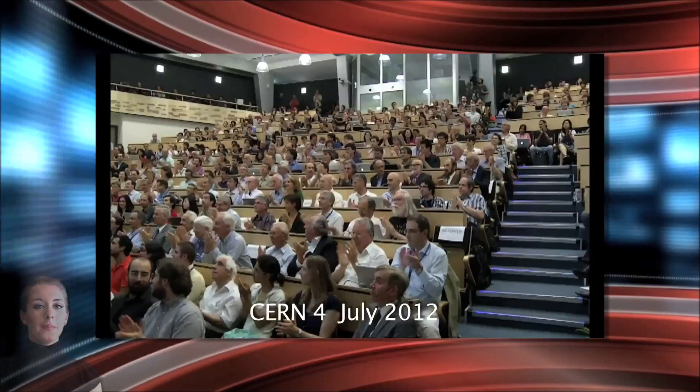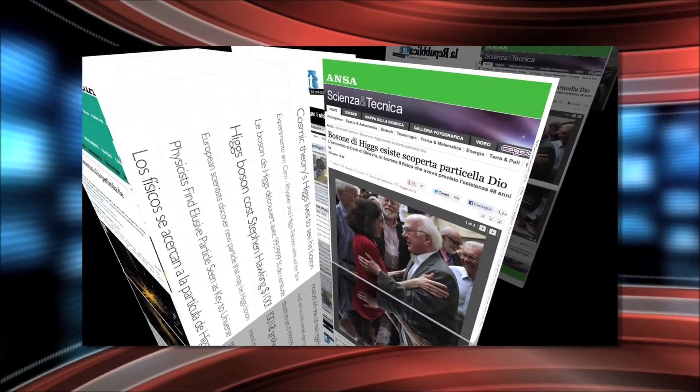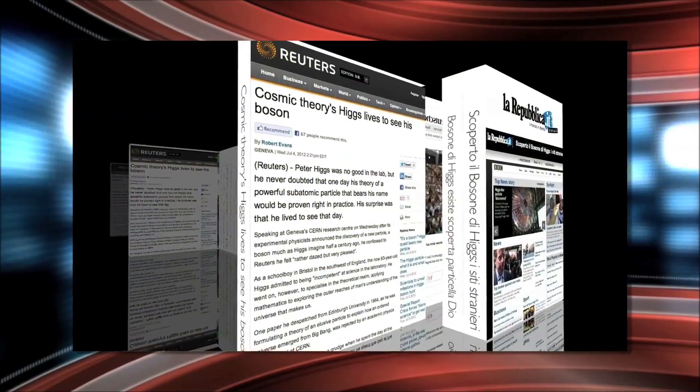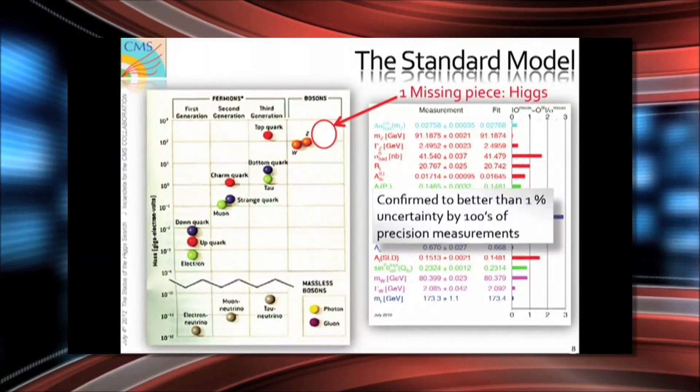Last July of 2012, the physics community made a big announcement that a new subatomic particle had been discovered at CERN's Large Hadron Collider. It fit the description of the long-sought-after Higgs boson. This would mean a major victory for theoretical physics and understanding the building blocks of nature.